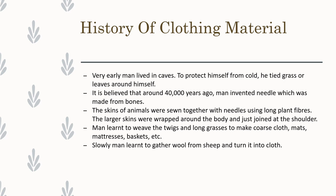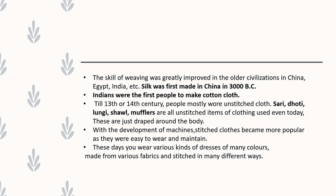After that, men learned to weave twigs and long branches to make coats, clothes, mats, mattresses, baskets, etc. Slowly, men learned to gather wool from sheep and turn it into clothes. Their skill of weaving greatly improved in older civilizations in China, Egypt, India, etc. Silk was first made in China in 3000 BC. Indians were the first people to make cotton clothes. Till the 13th or 14th century, people mostly wore unstitched clothes like saree, dhoti, lungi, shawl, and mufflers — all unstitched items, just draped around the body. With the development of machines, stitched clothes came into existence and became more popular and easy to wear. Nowadays we wear different kinds of clothes of different colors.